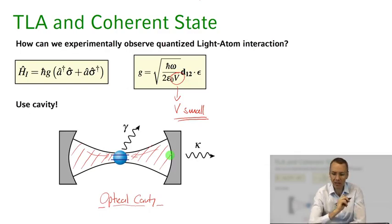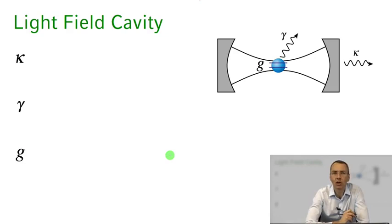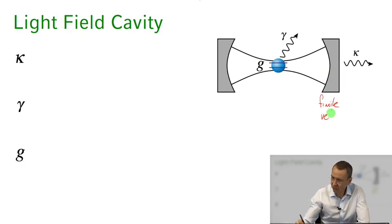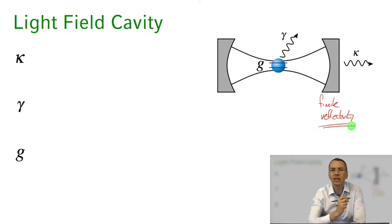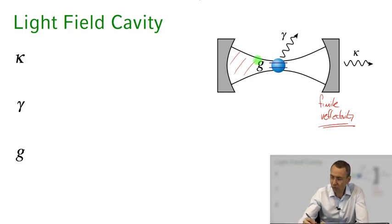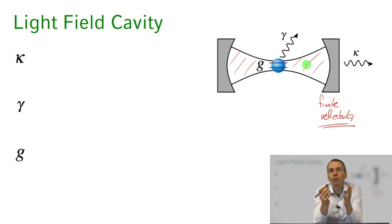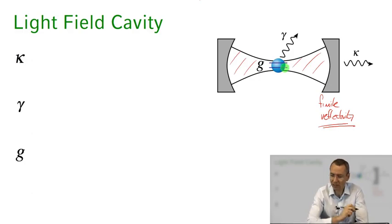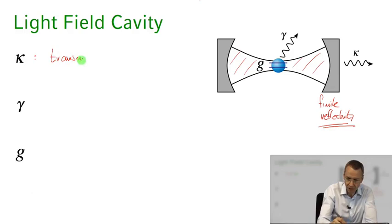What are the detrimental processes in these cavities? First of all, we have finite reflectivity from those mirrors, leading to the light field leaking out. If we have a single photon stored in the radiation field mode bouncing between the two mirrors, at some point that photon will leak out of the cavity and is lost in free space, where it cannot interact anymore with our atom. This finite reflectivity leads to transmission losses of the cavity.